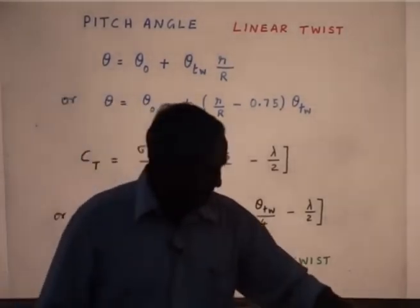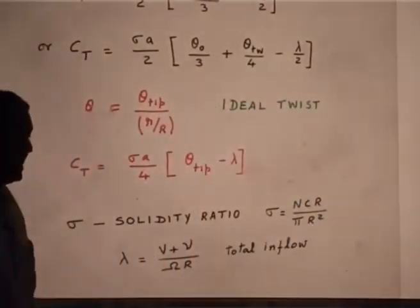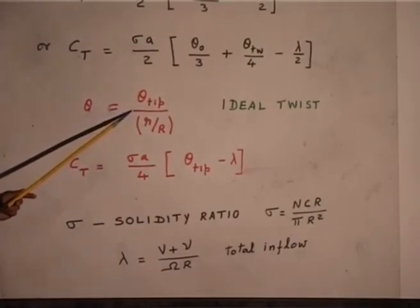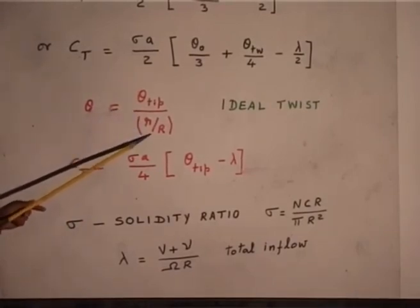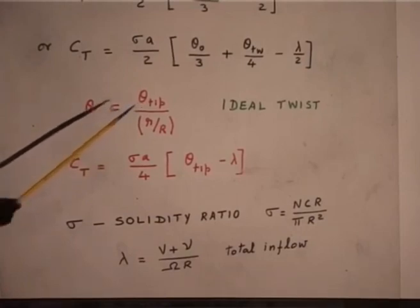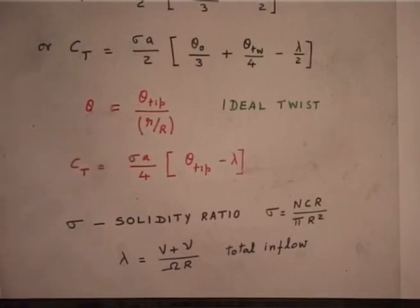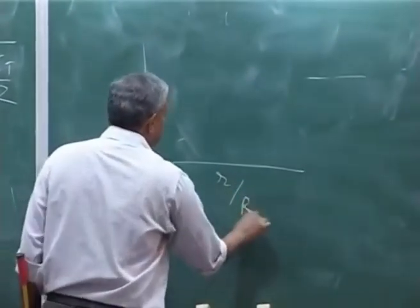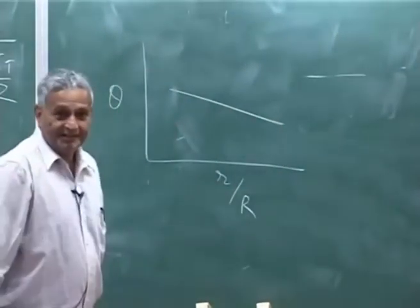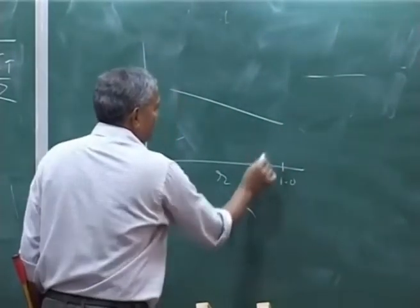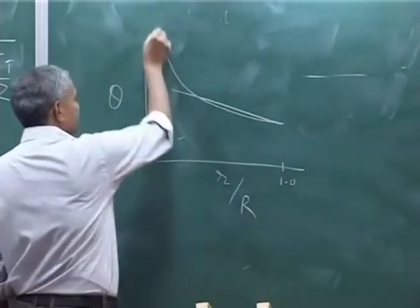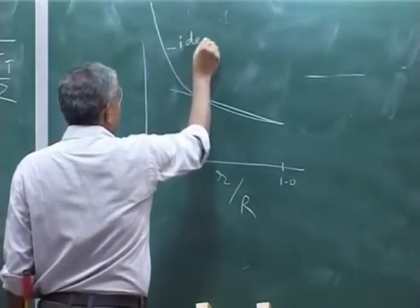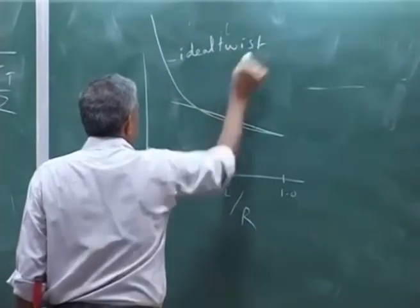Now there is something called ideal twist. I will just mention this and then we will close. That is if my pitch, please understand R over R is in the denominator, tip angle I set, as I come inboard it will go like this. Ideal twist. Linear twist is straight line. So it will be that is theta and linear twist may be like this, R over R, this is may be 1. But ideal twist, this is ideal, this is linear.